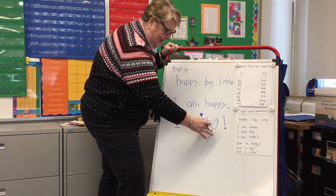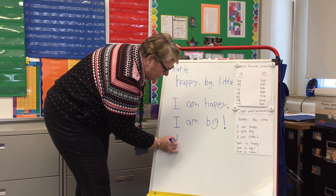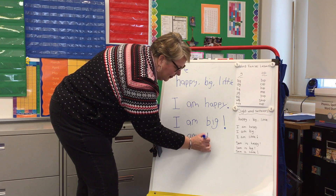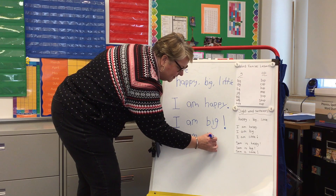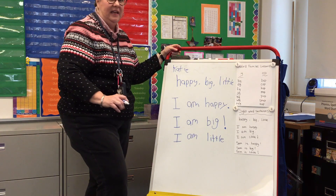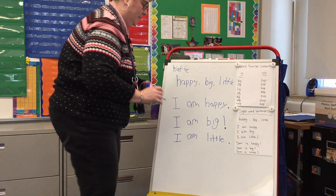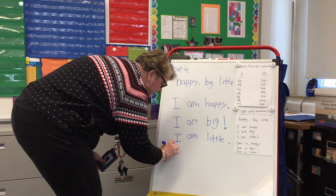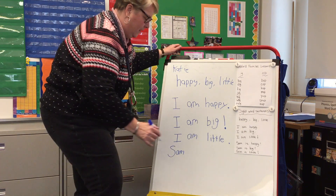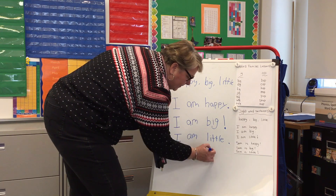Next one — I am — we're going to write 'little.' L, I, T, and then the L sound. Sometimes words have a silent E on the end that you can't hear. And then I'm going to do 'Sam' — S, uppercase to start with. And then I'm going to make my space — it is — Z, Z, is 'happy.' H, O, P. Sam is happy!